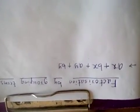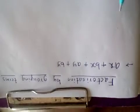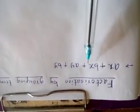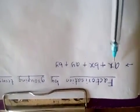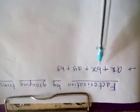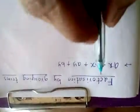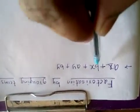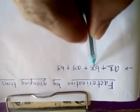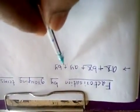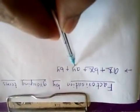Now let us take the first two terms: Ax plus Bx. What is the common factor of the first two terms only? X is a common factor. And in the last two terms, y is a common factor.